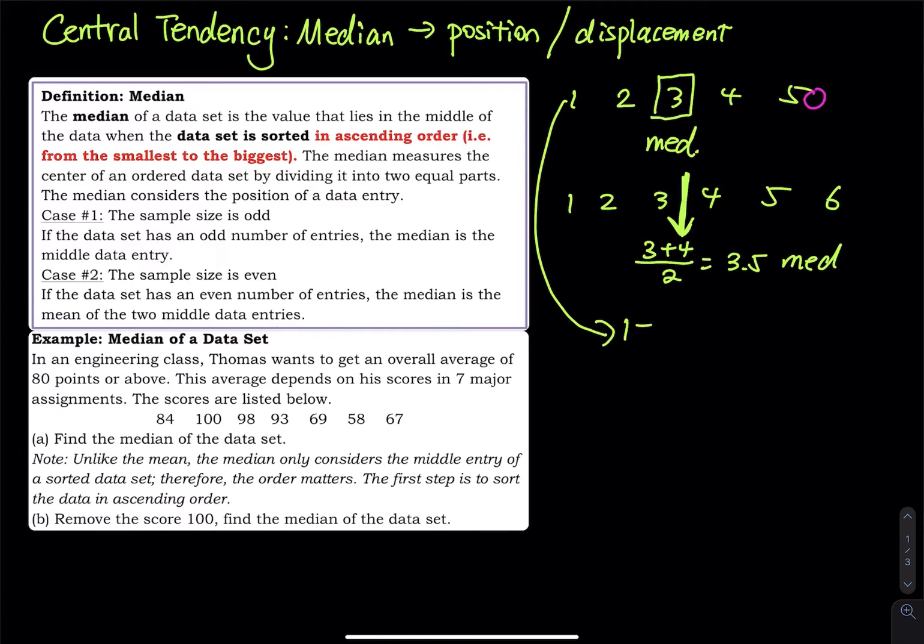The mean is 1 plus 2 plus 3 plus 4 plus 5 divided by 5. That equals 3, right? So after you make the change, you have 1 plus 2 plus 3 plus 4 plus 50 divided by 5. So that is equal to 60, 60 divided by 5, that is equal to 12.